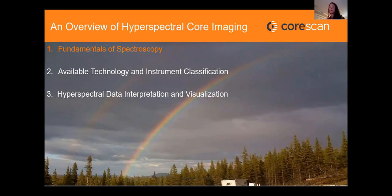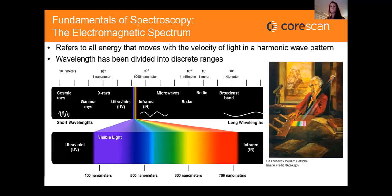To help everyone gain a better understanding of hyperspectral core imagery, I'm going to review some of the basics of spectroscopy and hyperspectral imagery, discuss what reflectance spectroscopy technology is available to us, and go over what products you can expect to see if you've decided to collect hyperspectral core imagery data. Spectroscopy gets defined as the study of the interaction of light or electromagnetic radiation with matter. Light is defined as an oscillating electric and magnetic field; these fields are perpendicular to each other and travel at the speed of light within a vacuum.